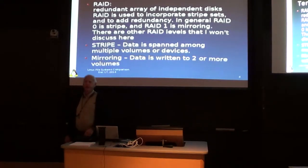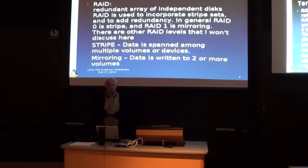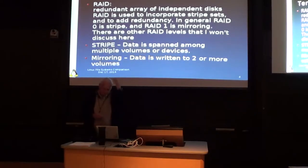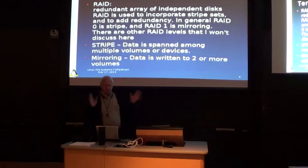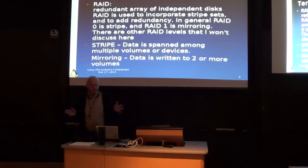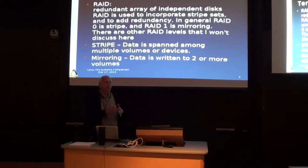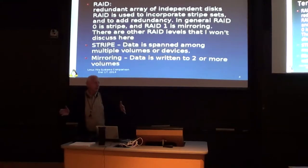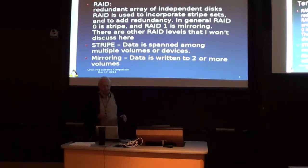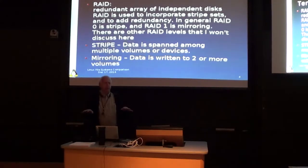I want to talk about some terminology. First is RAID — R-A-I-D — redundant array of independent disks. That's the current name for it. RAID is used to incorporate stripe sets and to add redundancy. In general, RAID 0 is stripe, where the file system spans multiple volumes — from multiple partitions or multiple volumes. RAID 1 is simple mirroring: one volume and another volume are just a mirror of each other.